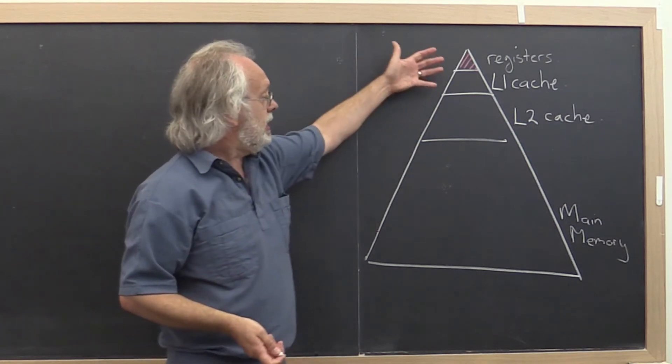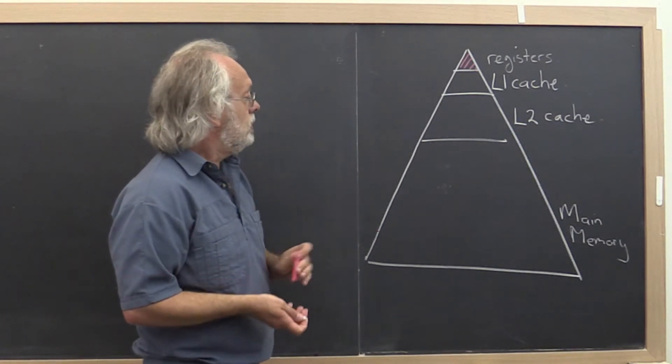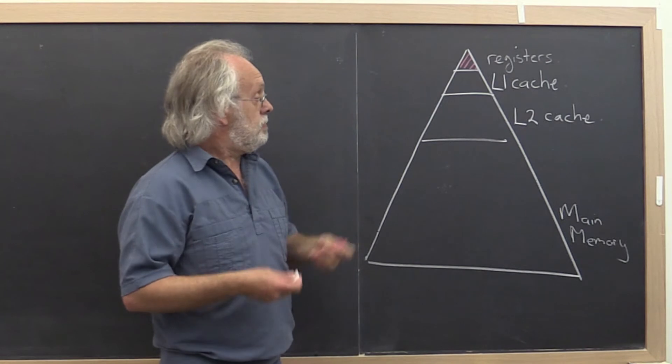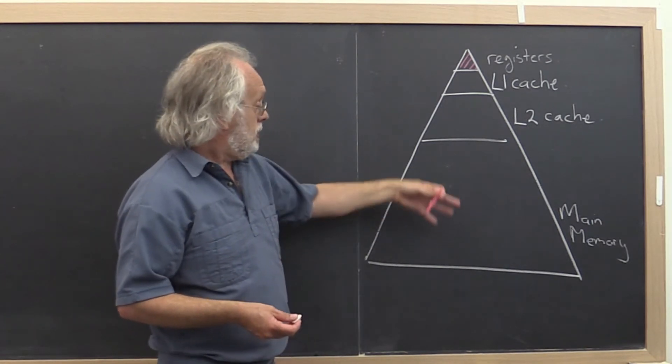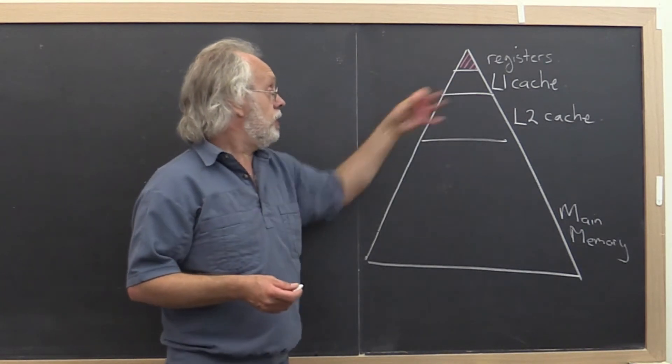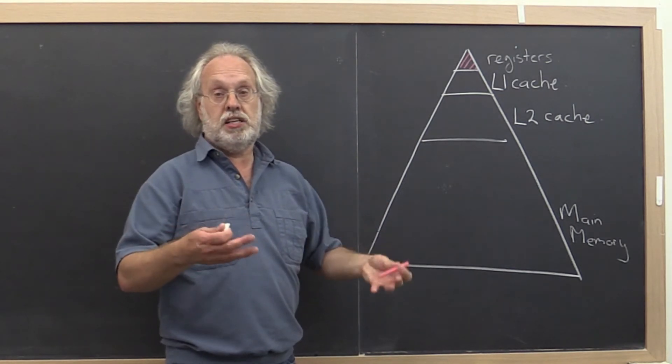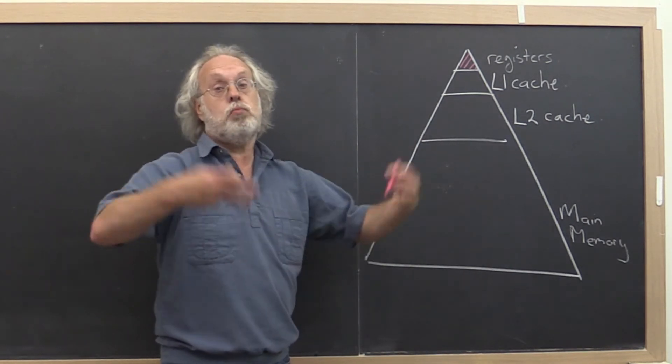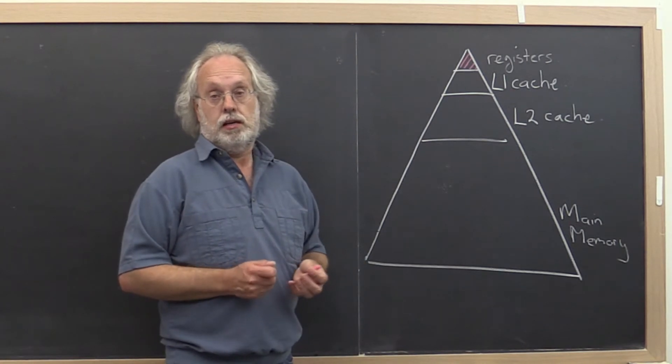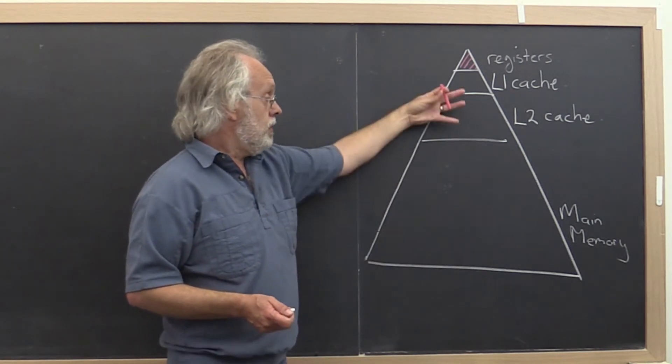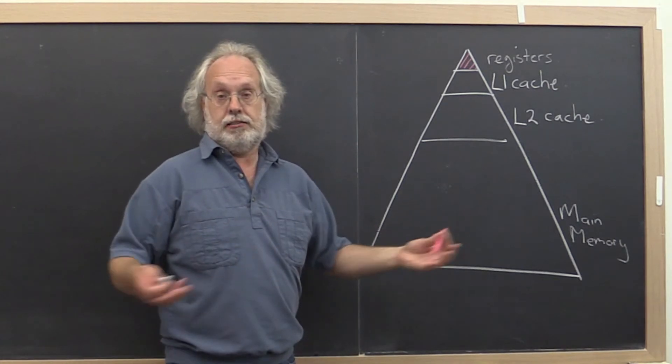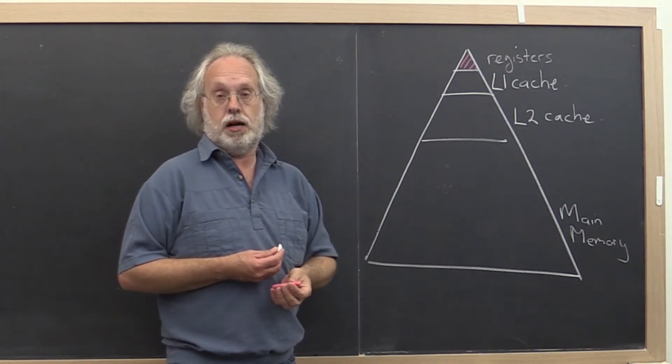And essentially what happens is the L1 cache is small. The L2 cache is bigger. And as a result, you can bring a bigger chunk of data into the L2 cache. Hopefully bigger means that you do much more computation with that data, and therefore you can overcome that bottleneck that the main memory has become.